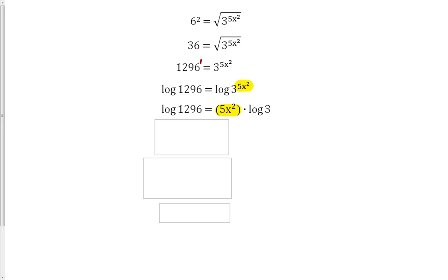Now at this point, we have an x squared that we want to get by itself because we want to solve for x. And really, that's just being multiplied by some constants. So we have the constant 5 and we have the constant log 3. So let's go ahead and divide those out from both sides, which means that on our right, we'll have x squared. And on the left, we'll have our log 1296 over 5 times log of 3.